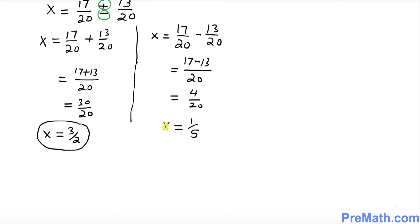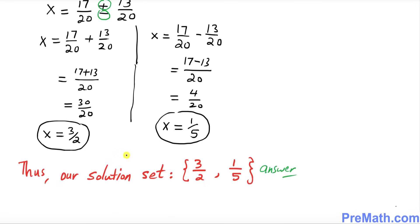So x equals 1 over 5 is another solution. Thus our solution set is 3 over 2 and 1 over 5, and that is our answer. Thanks for watching and please subscribe to my channel for more exciting videos.